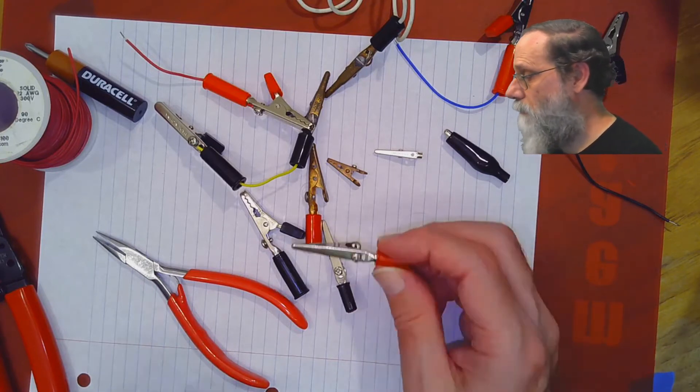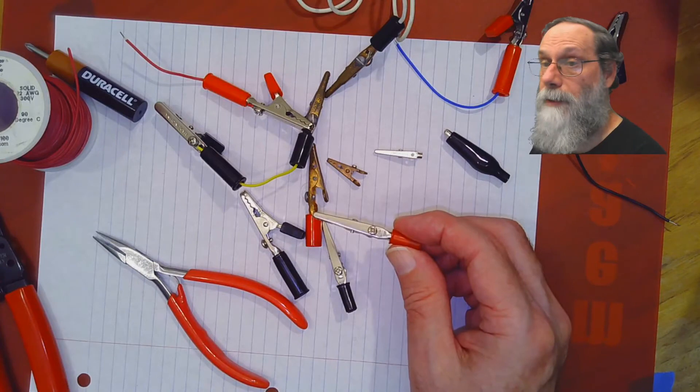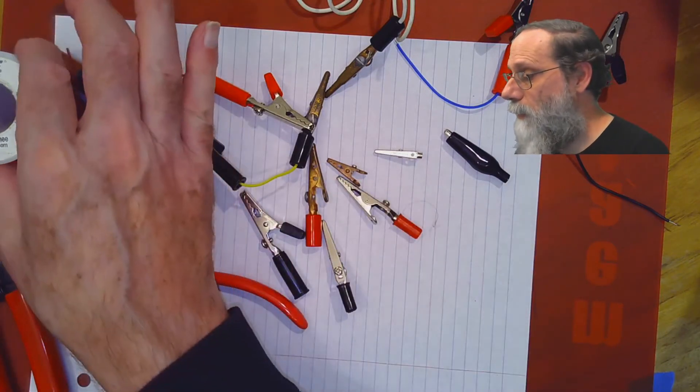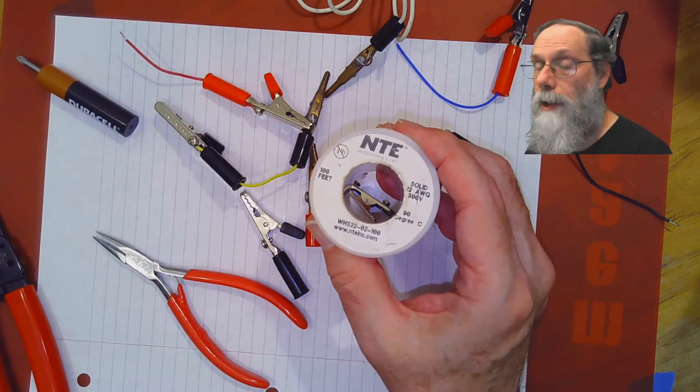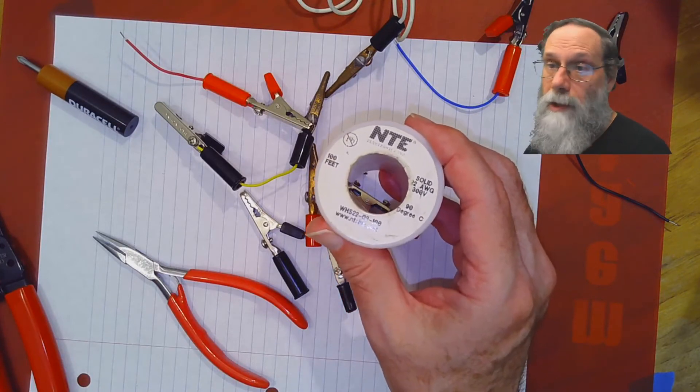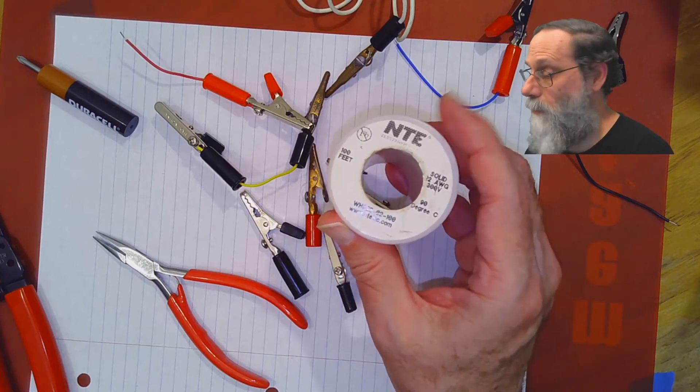So let's take one of these cheap clips, and I'll show you how you attach the wire to it. The wire I'm going to be using is just 22 gauge solid hookup wire. It's the same wire that we use in the breadboards. It's what works best in the breadboards.